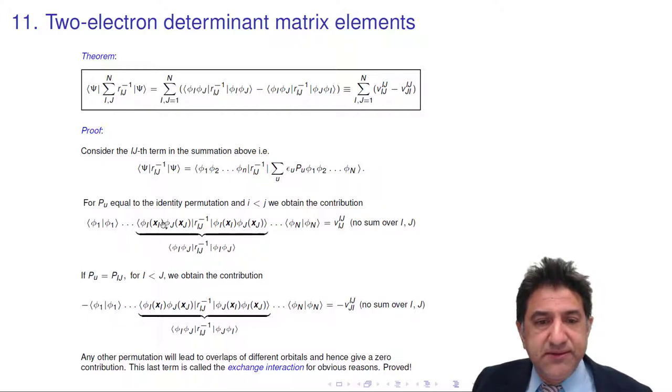And that's what it is. So here we have that term, phi i, phi j, r i j minus one. So we have the first term appearing already.